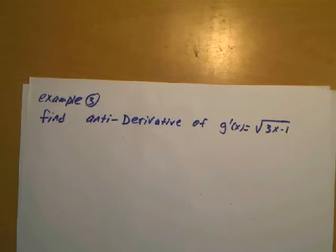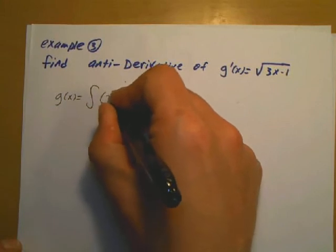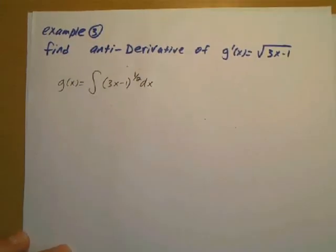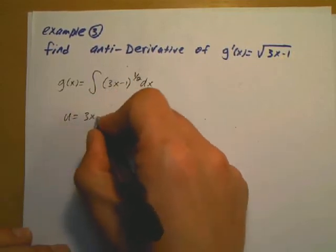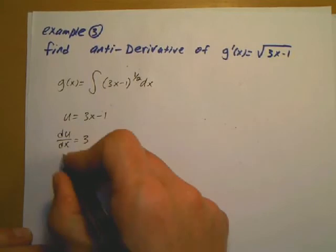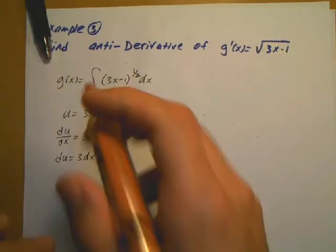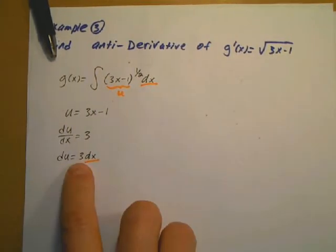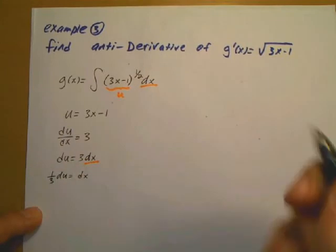One last example: finding the anti-derivative of the square root of (3x minus 1), which we write as (3x minus 1) to the 1 half power, with respect to x. The only inside part is 3x minus 1, so I let u equal that. The derivative du/dx equals 3, and cross-multiplying gives du equals 3 dx. So 1 third du equals dx.